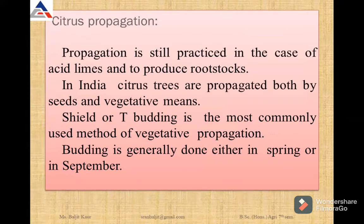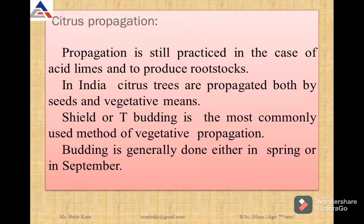Propagation in citrus is done both by seed as well as by vegetative means. Seed propagation is done only in some species, that is lime. Mainly, shield or T-budding is the most commonly used method of vegetative propagation in the case of citrus. This budding is generally done in spring or in September.